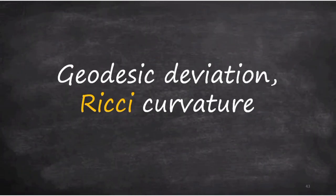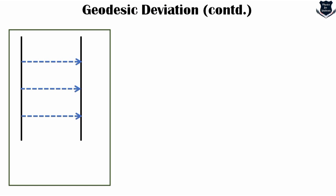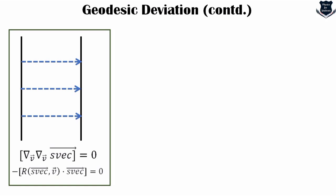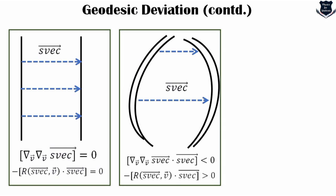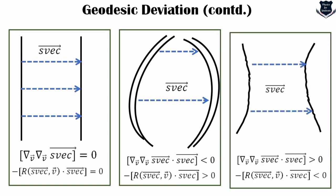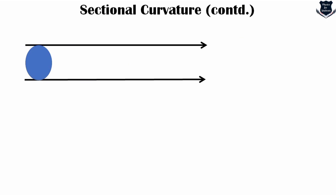Now we come to geodesic deviation and Ricci curvature. If we're moving along two lines with separation vectors, the Ricci curvature tells how much the separation is changing. In flat space the Ricci curvature is 0 and the separation vector is also 0. In a manifold where geodesics are converging, the Ricci curvature is greater than 0 and the separation vector is less than 0. Where geodesics are spreading out, the Ricci curvature is less than 0 and the separation vector is greater than 0. I have a separate video on geodesic deviation for more details.